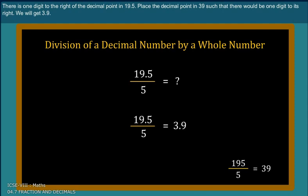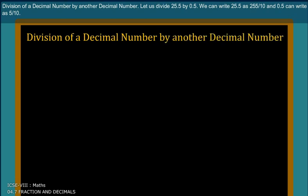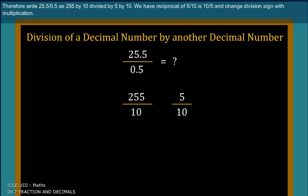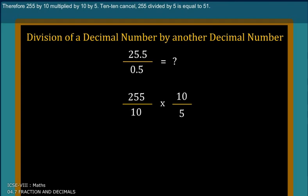Division of a decimal number by another decimal number. Let us divide 25.5 by 0.5. We can write 25.5 as 255 by 10, and 0.5 can be written as 5 by 10. Therefore, write 25.5 by 0.5 as 255 by 10 divided by 5 by 10. We have reciprocal of 5 by 10 as 10 by 5 and change division sign with multiplication. Therefore, 255 by 10 multiplied by 10 by 5. Ten and ten cancel. 255 divided by 5 is equal to 51.